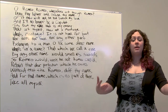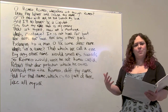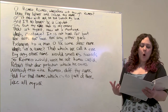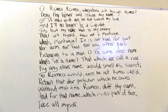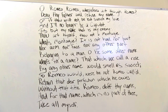Since Shakespeare is designed to be performed, let's start off by just reading through this soliloquy. Have a stand up, look at the text, do your best Shakespearean voice, and say: O Romeo, Romeo, wherefore art thou Romeo? Deny thy father and refuse thy name. Or if thou wilt not, be but sworn my love, and I'll no longer be a Capulet. Tis but thy name that is my enemy. Thou art thyself, though not a Montague. What's a Montague? It is nor hand, nor foot, nor arm, nor face, nor any other part belonging to a man. O be some other name. What's in a name? That which we call a rose by any other name would smell as sweet. So Romeo would, were he not Romeo called, retain that dear perfection which he owes without that title? Romeo, doth thy name, and for that name which is no part of thee, take all myself.